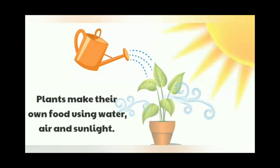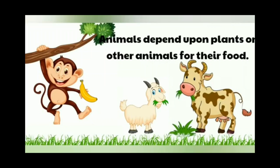Plants are also living things, so they also need food and water. Plants make their own food using water, air, and sunlight. Animals are also living things, so animals depend upon plants or other animals for their food. Smaller animals eat plants, and bigger animals eat smaller animals. We will discuss this in detail in another chapter.